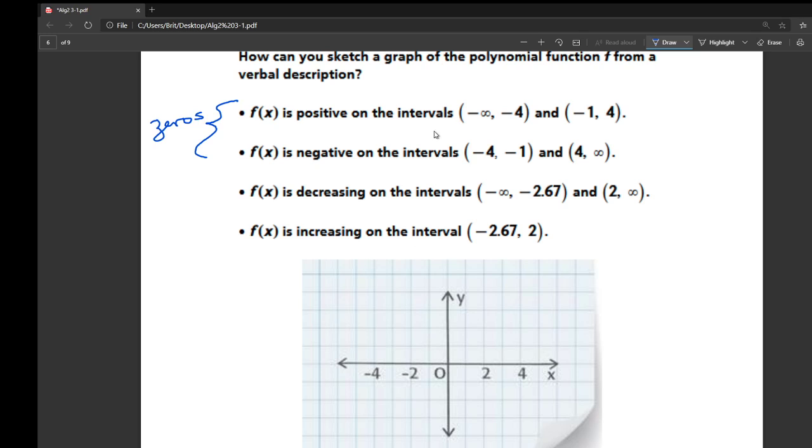So this one says it's positive from the interval from negative infinity to negative 4. So at negative 4, it's changing direction. It's negative on the interval, so it'll be up here somewhere. It'll be negative on the interval negative 4 to negative 1. So the graph will be down here somewhere.